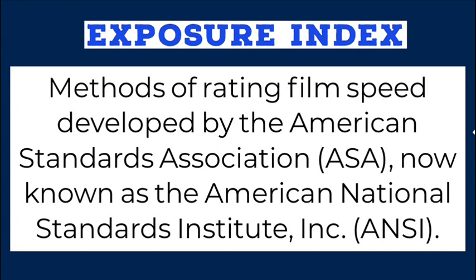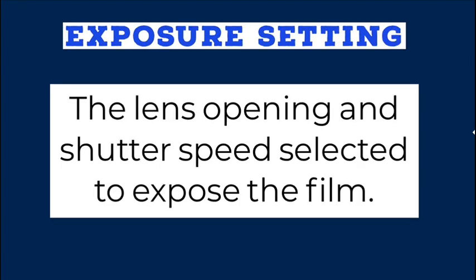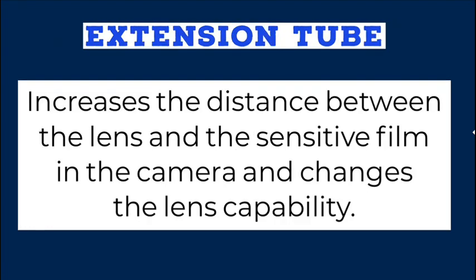Exposure index: methods of rating film speed developed by the American Standards Association, now known as the American National Standards Institute Inc., ANSI. Exposure setting: the lens opening and shutter speed selected to expose the film. Extension tube: increases the distance between the lens and the sensitive film in the camera and changes the lens capability.